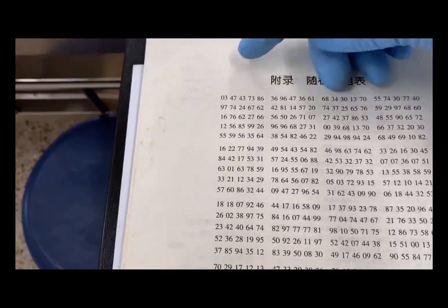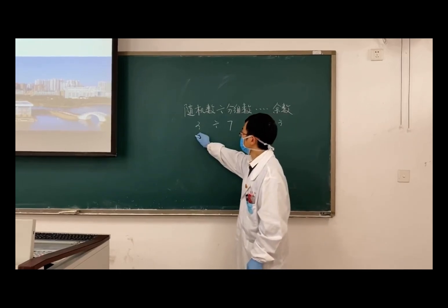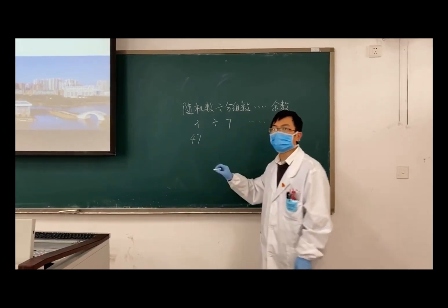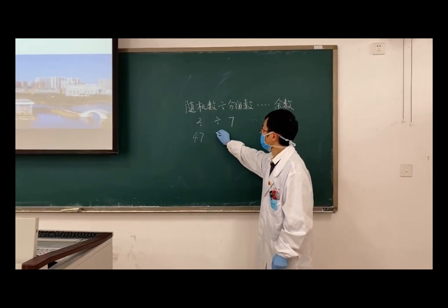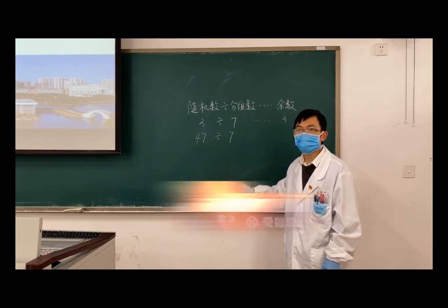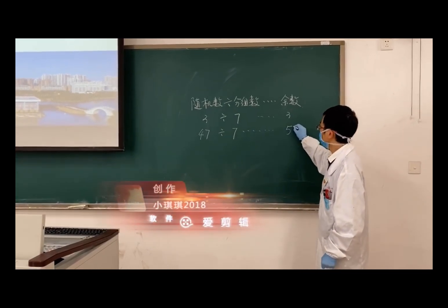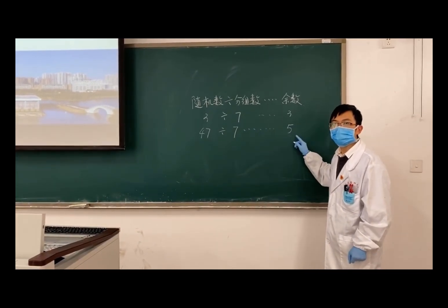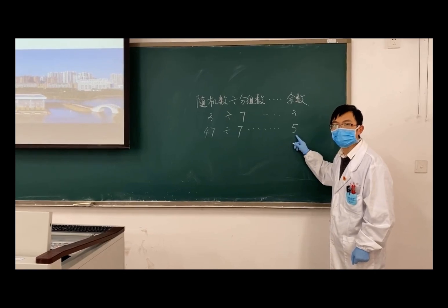Next, for the second round of grouping, we use the second random number 47. Similarly, 47 is divided by 7 to obtain the remainder of 5, which means that the first mouse in this round of grouping is placed in the fifth cage. Other mice are placed in other cages in order.